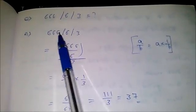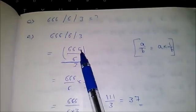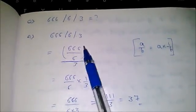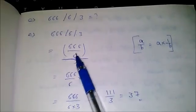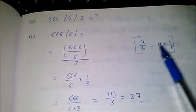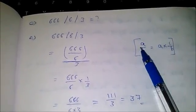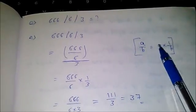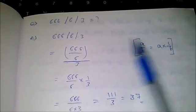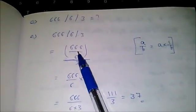And the rest of the things considered as numerator and as a single value. 666 divided by 6 acts as numerator. As we know, a by b is equal to a into 1 by b. Here a means 666 divided by 6.